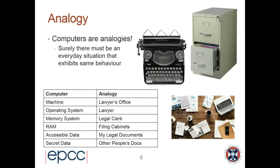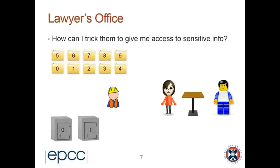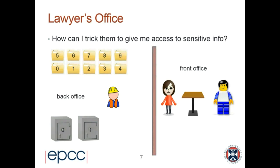The memory system, which is semi-autonomous, is represented by a legal clerk. The RAM is filing cabinets. Accessible data is my legal documents stored in the lawyer's office that I want to access, and the secret data is other people's documents stored in a safe which I'm not allowed access to. There's a front office where I'm allowed access, and a back office separated by a wall where the business goes on.